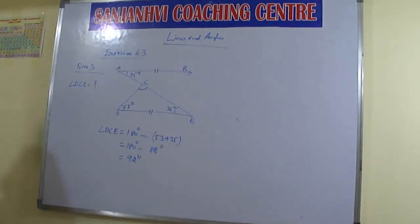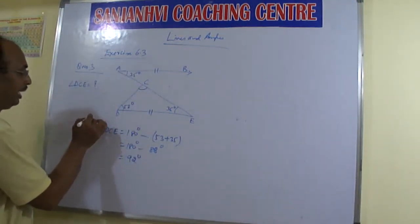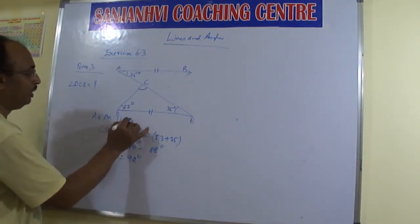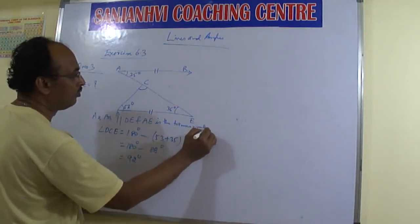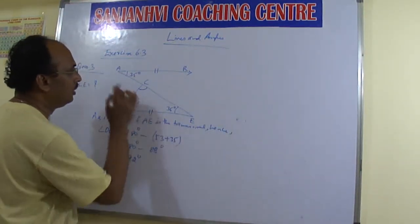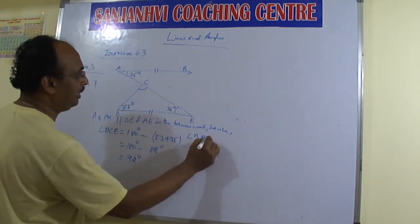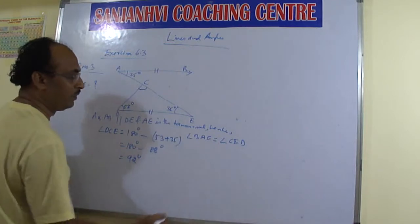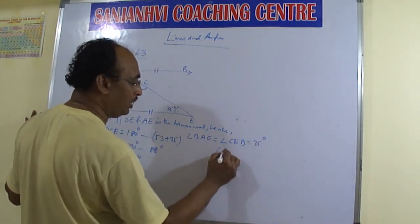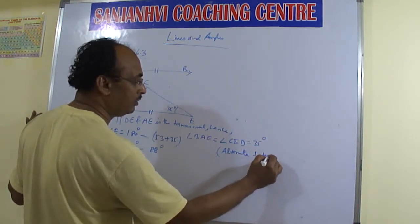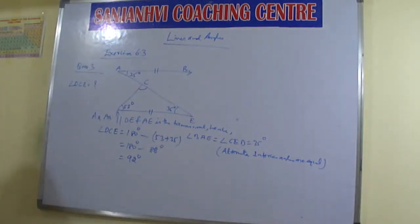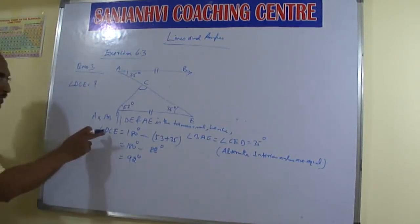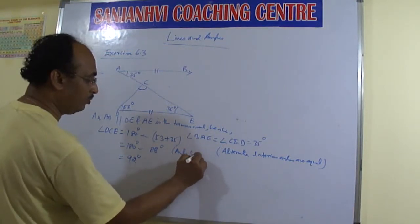The property of parallel lines is also included here. You need to write that AB is parallel to DE and AD is the transversal. Hence, angle BAE equals angle CED equals 35 degrees by alternate interior angles. Then apply the angle sum property to find angle DCE.